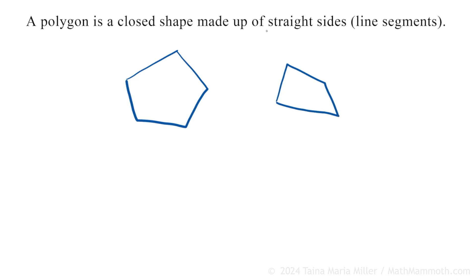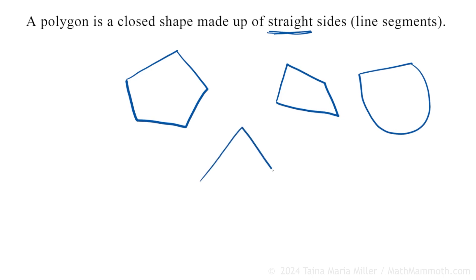And another thing: it says straight sides or line segments. So here's another way that you make a shape that's not a polygon — maybe it has a straight side here, but then it has a curvy side. That's not a polygon. But what about this one? Line segment, line segment, line segment — let's make it closed. Is that a polygon? Yes, it is. It fulfills the definition: it is a closed shape made up of line segments.